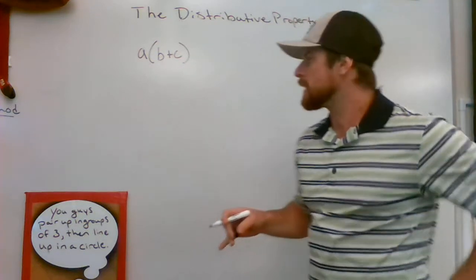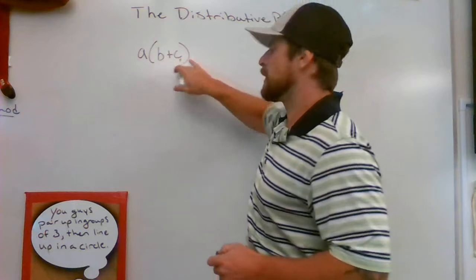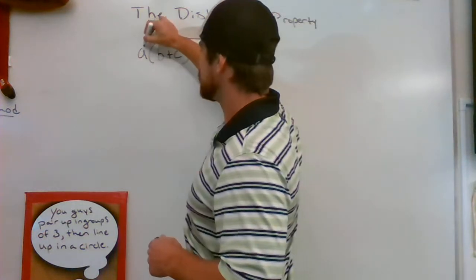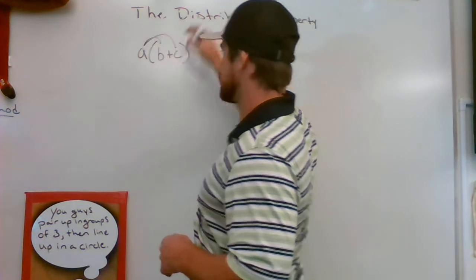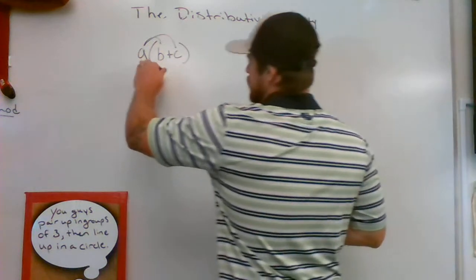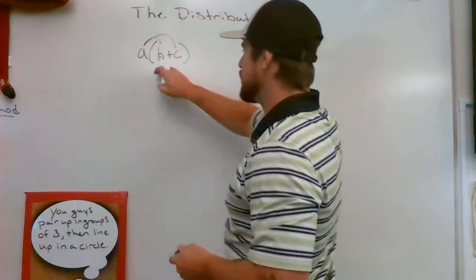So right here what I've written out is A times the sum of B plus C. Now what you're gonna do with the distributive property, the best technique you can use is draw rainbow lines to each term. That's one helpful reminder that this outside term of A needs to be multiplied by both of the inner terms B and C.